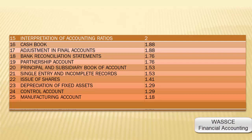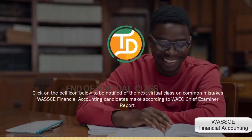Depreciation of fixed assets: 1.41%. Control accounts: 1.29%. Manufacturing accounts: 1.18%. With these tips, we believe this information will help students get prepared for the exam in order to perform better and obtain excellent results. In our next episode, you will get to learn more about how the topics are answered on various topics according to the WAEC chief examiner reports. Thank you.